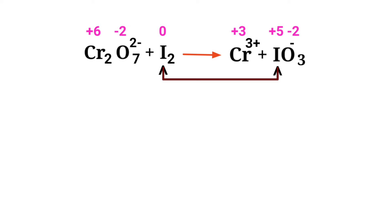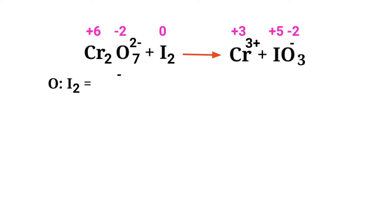In this equation, iodine has a charge of 0 and is changing to +5, so iodine is being oxidized. Chromium has a charge of +6 and is changing to +3, so chromium is being reduced.